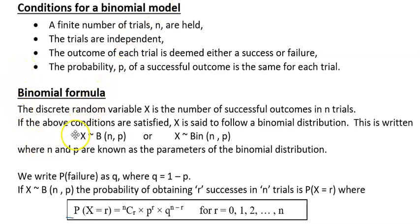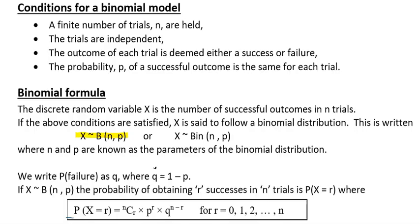The formula looks very tricky but it's not really. X is distributed as the binomial distribution with n trials and p is the probability of success — written as X ~ B(n, p). If the probability of success is p, then q is the probability of failure. So if p equals 0.3, then q equals 1 minus p, which is 0.7.